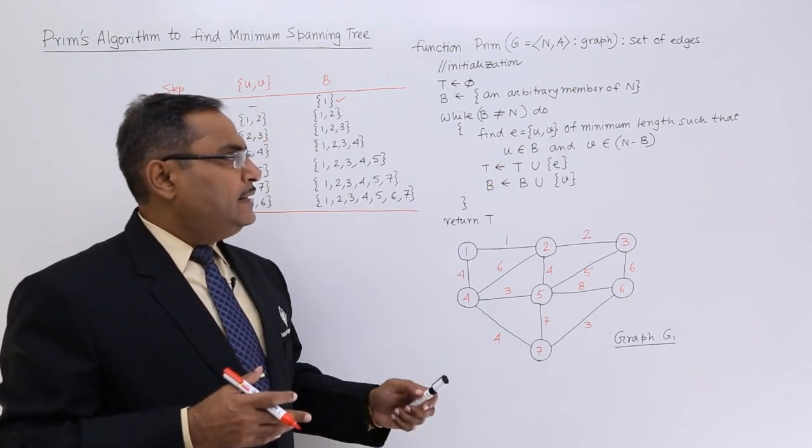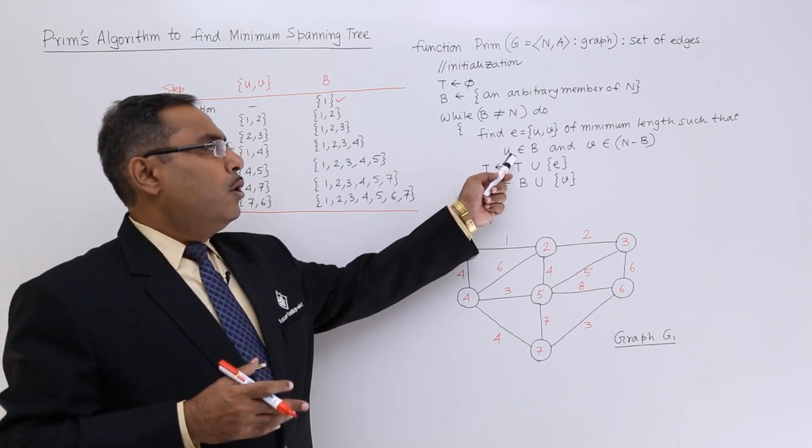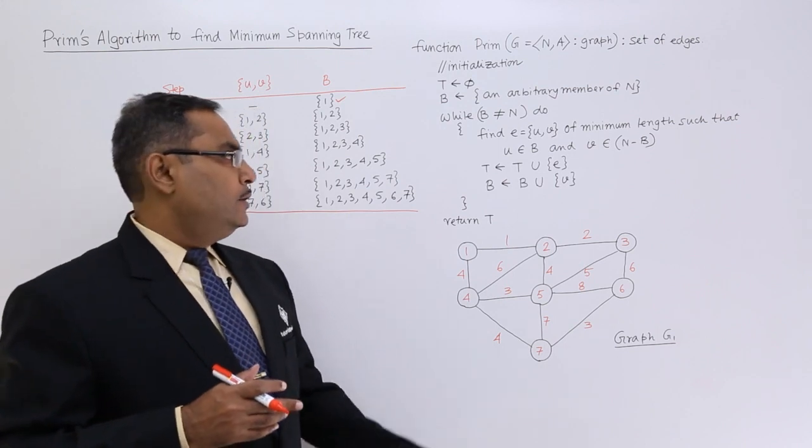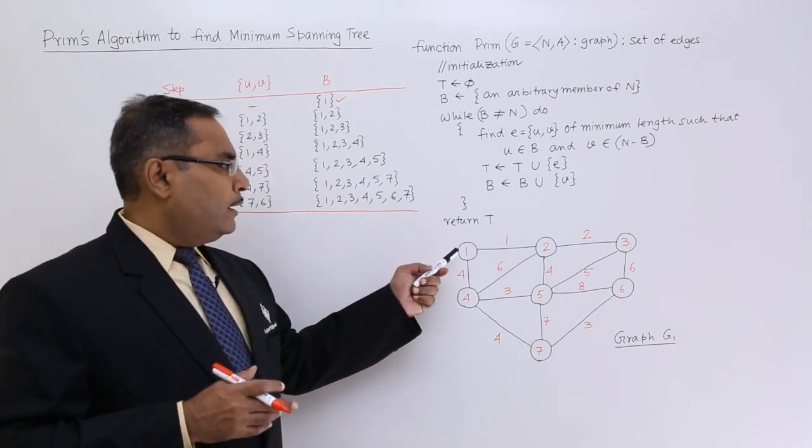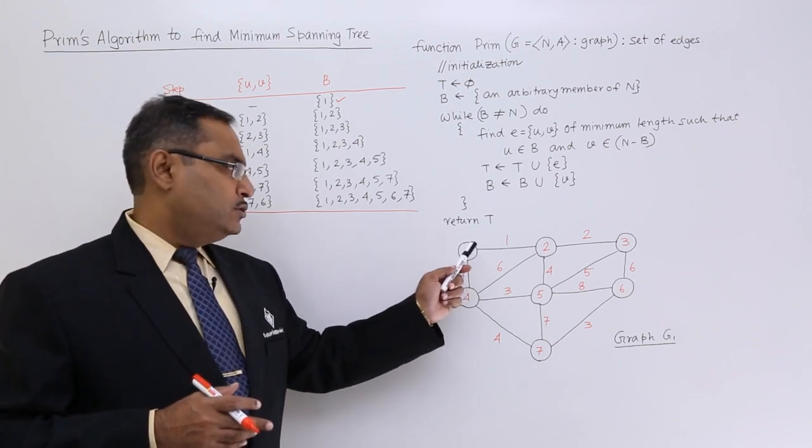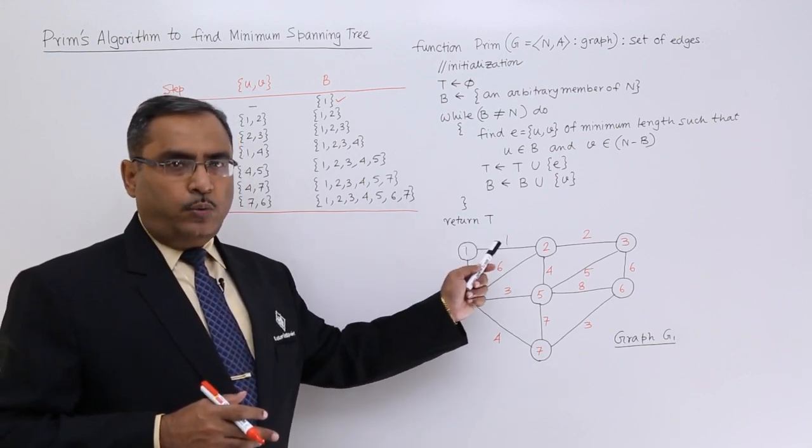of minimum length such that u will be belonging to b and v will be belonging to n minus b. Now you see, from 1, what is the minimum weightage you are having? I think that is 1, that is edge 1-2.